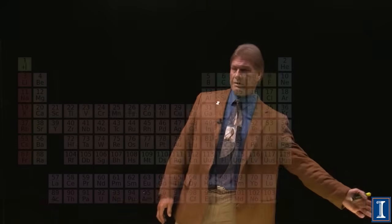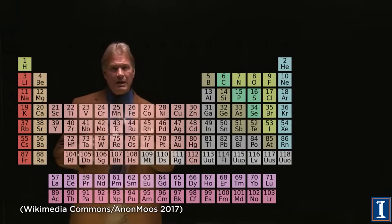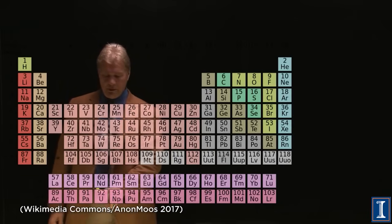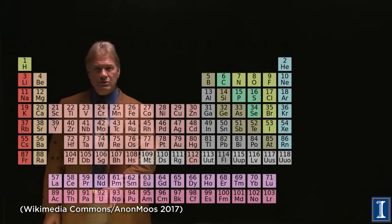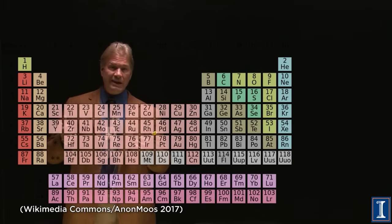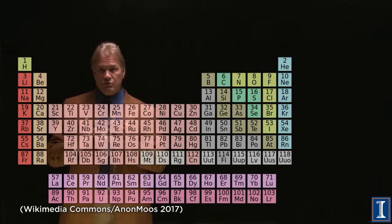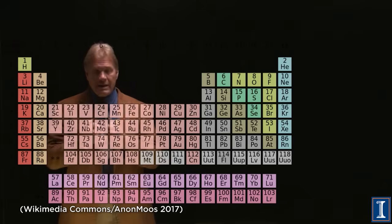Nuclear waste — everybody has always heard about it. Well, what is it? Let's take up a periodic table here. The basic idea is you're splitting up uranium — element 92, the heaviest naturally occurring element. There are a couple different isotopes of uranium. Uranium-238 basically goes along for the ride, and uranium-235 is fissile, meaning it will fission with any energy neutron.